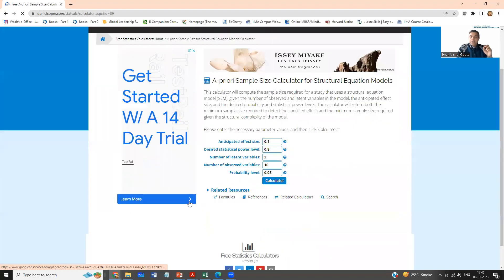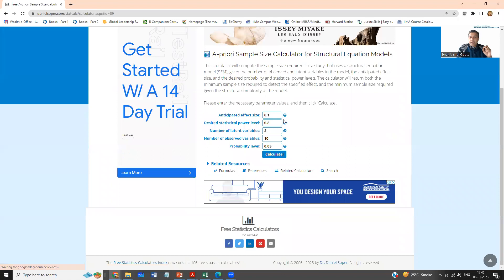Now when you click on this, you would see that a table like this opens up where you are asked to input some parameters. Anticipated effect size: what is the minimum effect size that you would like to compute? Typically we say that 0.3 is a small, not very small, but reasonably small effect size that I want to get detected in my structural model.